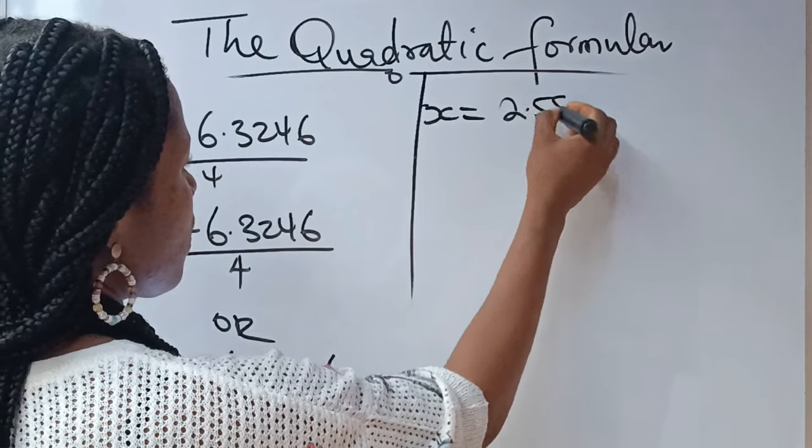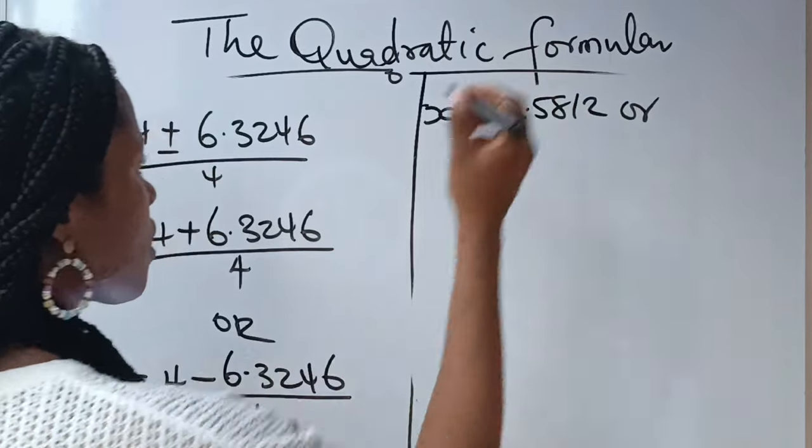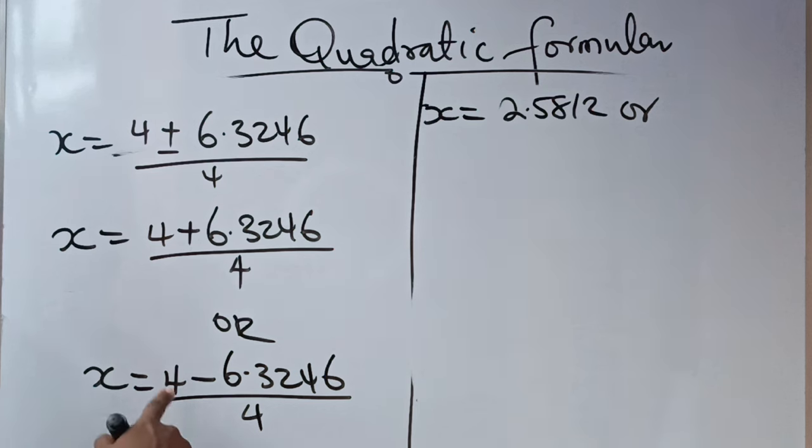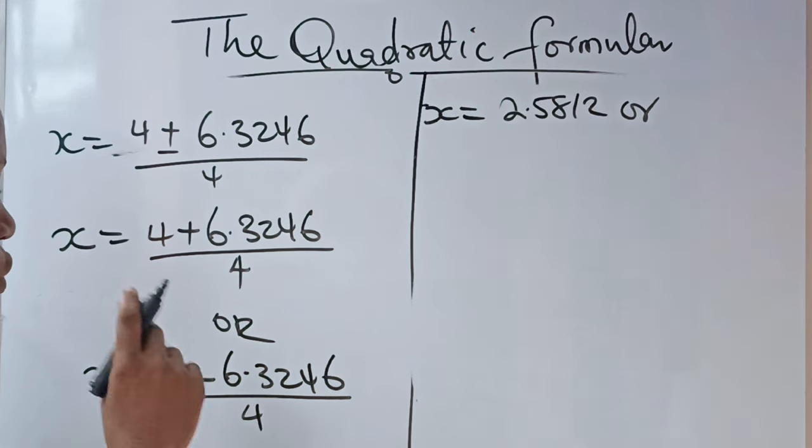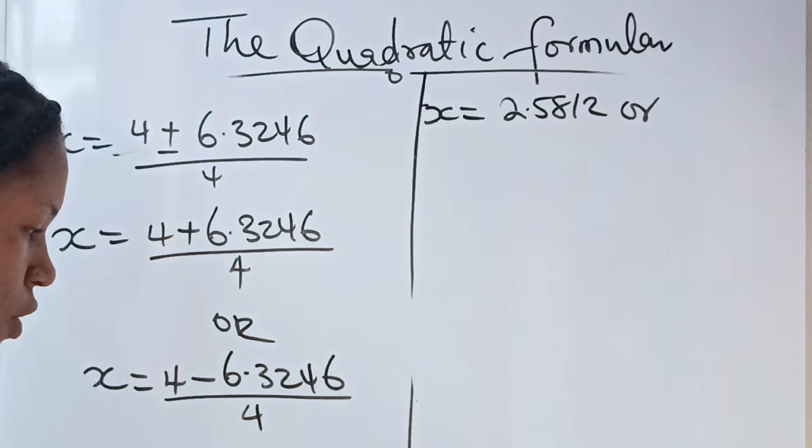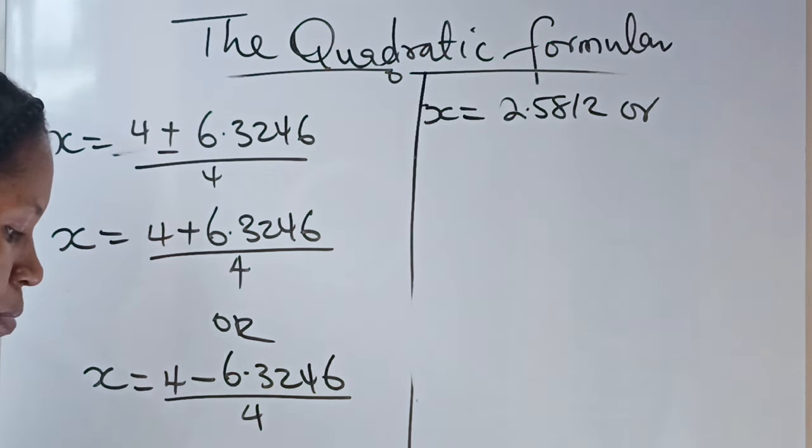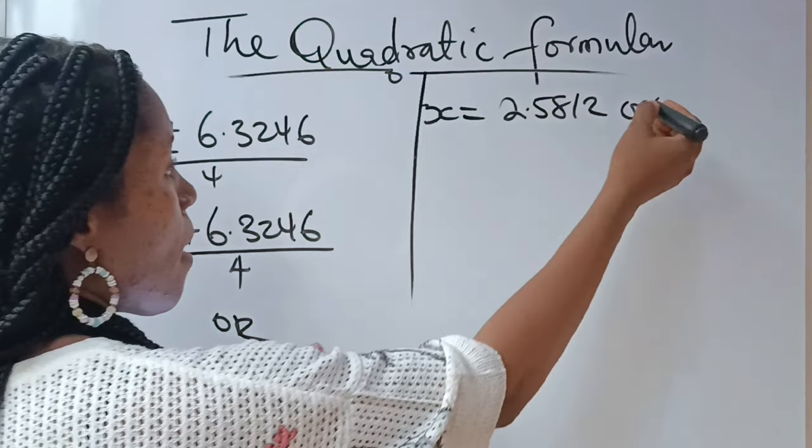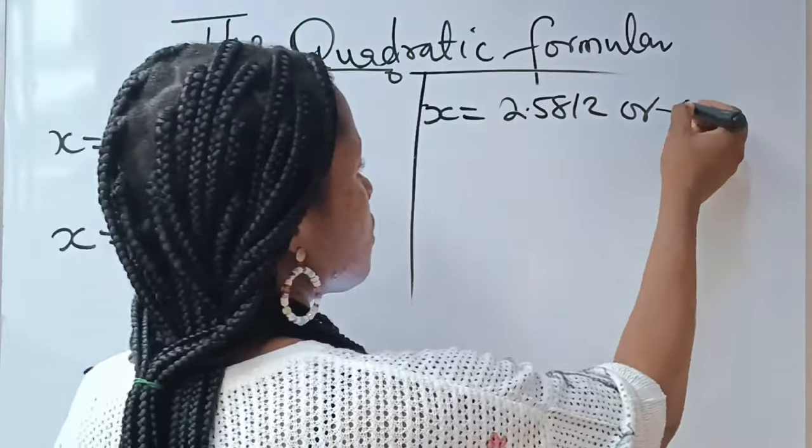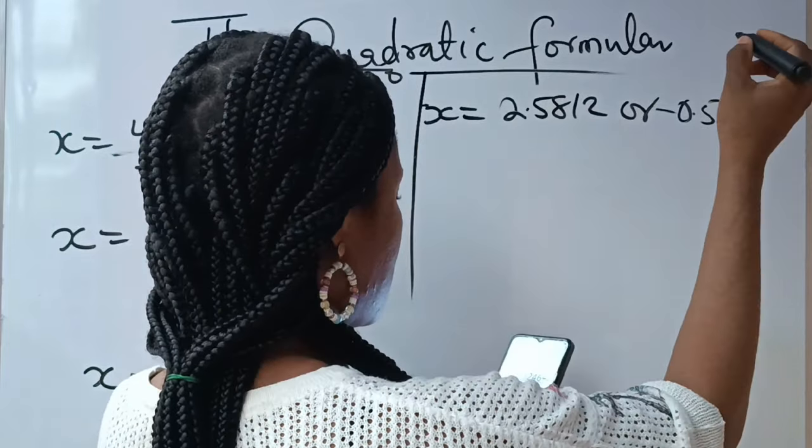Or, for the second one, 4 - 6.3246 will give you -2.3246. Divided by 4, you're going to have -0.5812. Now, these are the two values of our x.